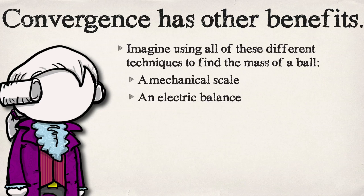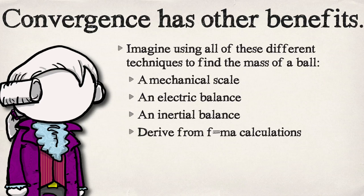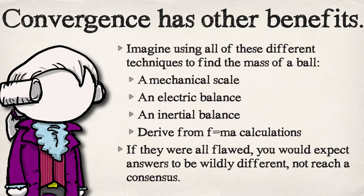For instance, if I wanted to find the mass of a ball I can use a mechanical scale, an electrical balance, or — if you work for NASA — an inertial balance. You could also do calculations of force, mass, and acceleration to get mass in all these different ways. You would expect that if you couldn't find the mass of that ball, these data points wouldn't converge on the same mass. So you have to ask yourself: why are they all getting the same answer if all these things are wrong?